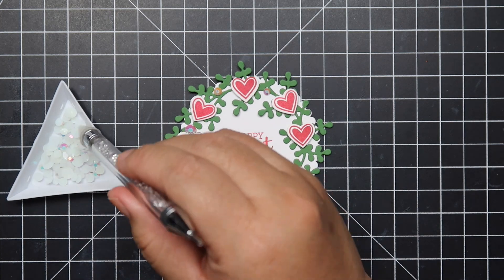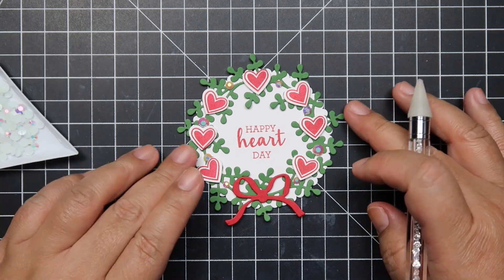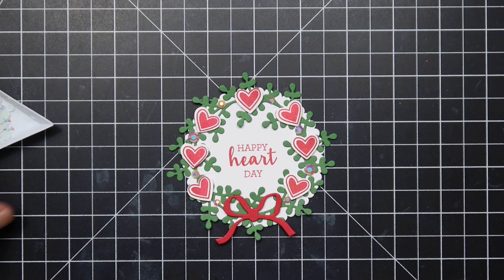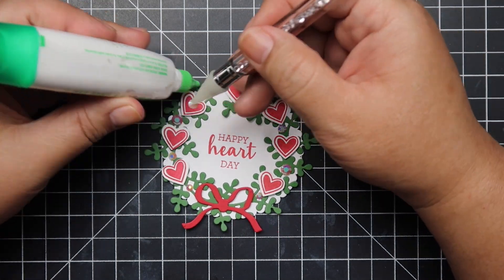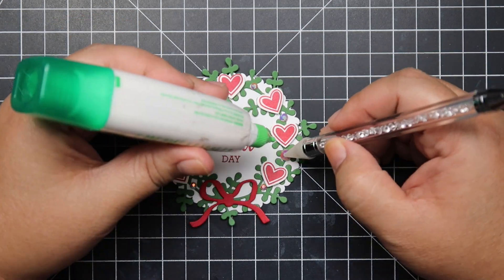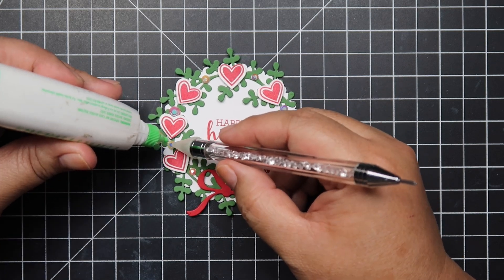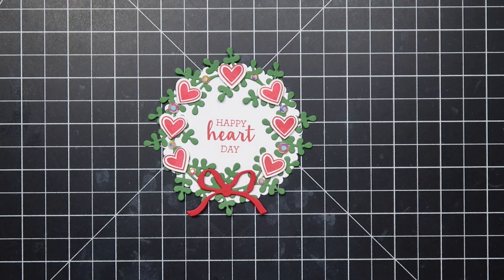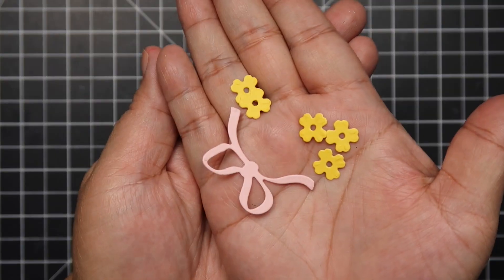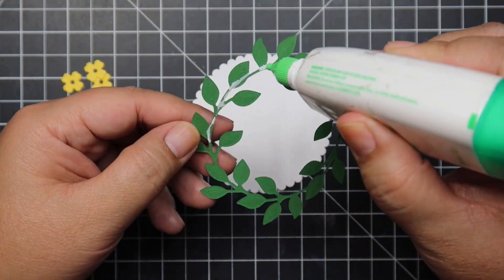So moving on, now I'm going to go ahead and again decorate my wreath with some of my Pink Fresh Studio jewels and I'm picking different sizes just to give it variation. I'm really having fun making these tags. I also forgot to mention that I did use the largest scallop die from the Stampin' Up Layering Circles dies.